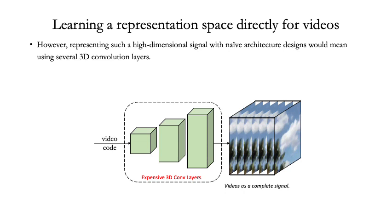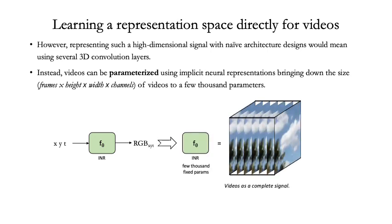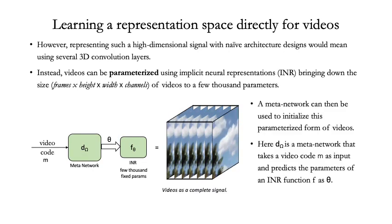In a naive implementation, generating full videos would mean employing several 3D convolutional layers. As the dimension of the video increases, the computational requirements would drastically increase. Instead, videos can be parameterized using implicit neural representations. In such a paradigm, a function would take a pixel location x, y, t as input and generate the RGB value of that pixel. This would reduce the dynamic dimension of videos with millions of pixels to a constant few thousand parameters. With only a few thousand parameters, a metanetwork can now be used to predict these neural representations.